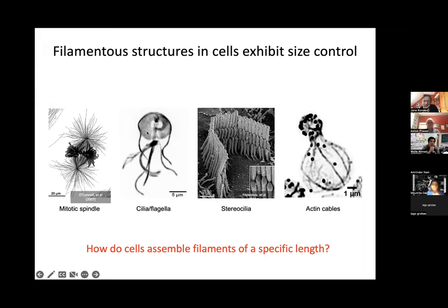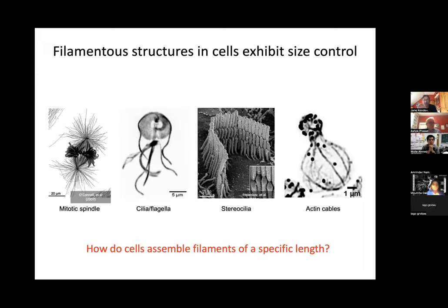These are all actin-based structures that come out of a single cell — the geometry is just fascinating. Some progress has been made thinking about actin cables: linear structures that form in budding yeast used for transporting secretory vesicles to the bud, bringing the protein goodies the bud needs to grow into a new cell. A lot is known about the structure of these cables, their formation, and their protein components. The question remains: when you put all these things together, how do they make filaments of a specific length?